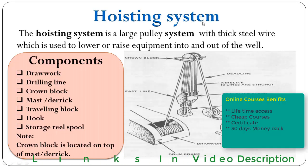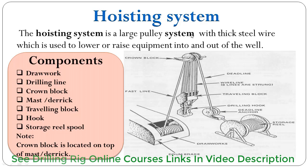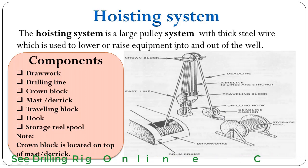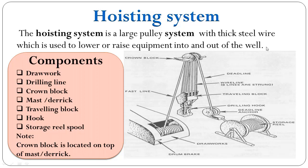The hoisting system is a large pulley system with thick steel wire, which is used to lower and raise equipment into and out of the well. The hoisting system components consist of drawworks, drilling line, crown block, mast or derrick, traveling block, hook, and drilling line storage spool.